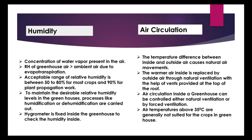A hygrometer is fixed inside the greenhouse to check humidity. Air circulation: The temperature difference between inside and outside air causes natural air movements. The warmer air inside is replaced by outside air through natural ventilation via vents at the top of the roof. Air circulation inside a greenhouse can be controlled either by natural ventilation or by forced ventilation.